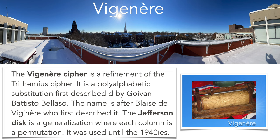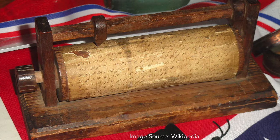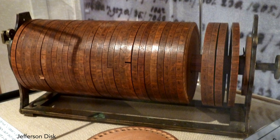The Vigenère cipher refines the polyalphabetic idea by adding a keyword which tells how to scramble the alphabets — not a simple shift each time but using a word. Here's an implementation used during the Civil War, essentially a Trithemius cipher that becomes the Vigenère cipher when used with a keyword. This can be refined further using arbitrary permutations in each alphabet. This is the Jefferson disk, a generalization of the Vigenère idea, used until the 1940s.